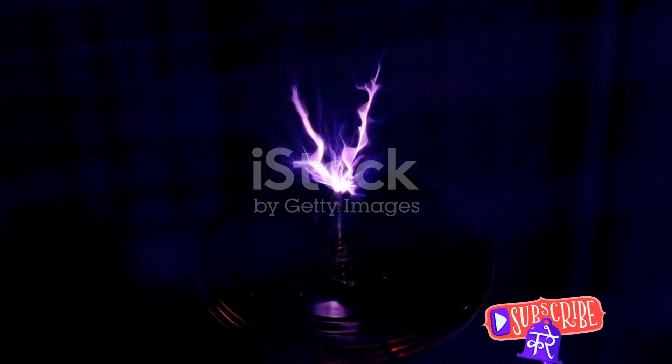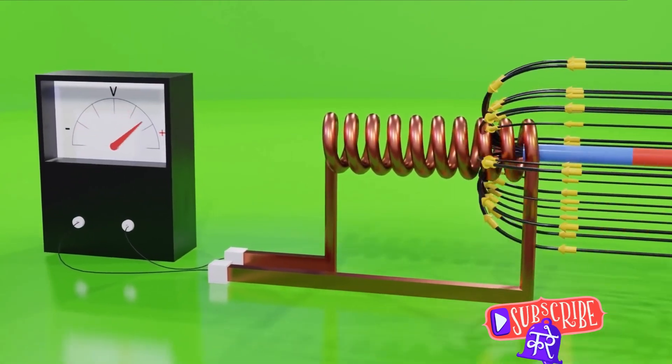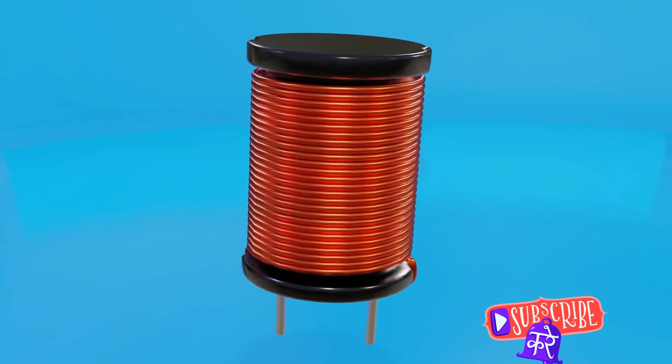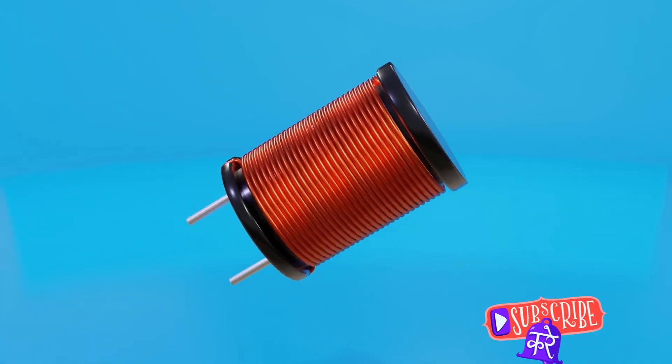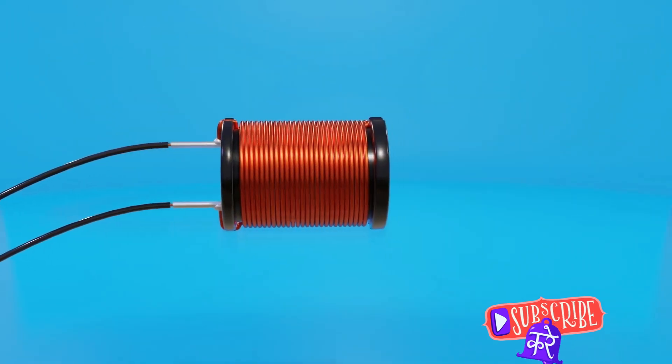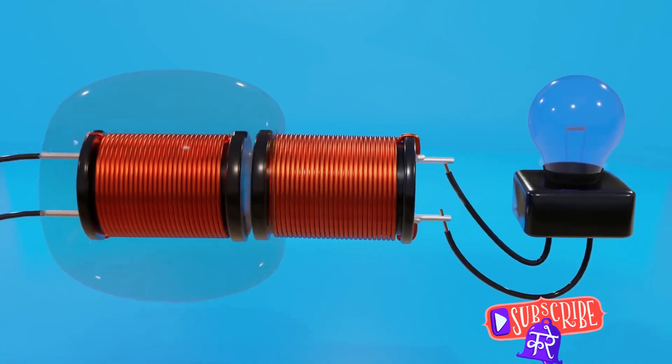To understand the working of a Tesla coil, it's crucial to first familiarize ourselves with its basic components. Imagine a Tesla coil as a high voltage resonant transformer. It's a bit like a musical instrument and its main components are the primary coil, secondary coil, spark gap and power source.